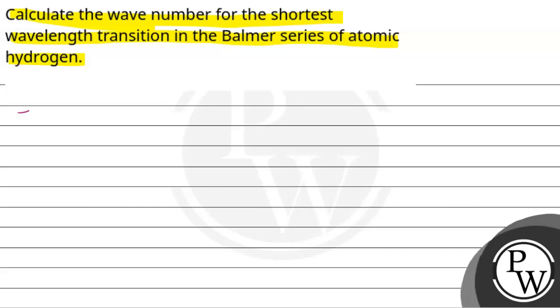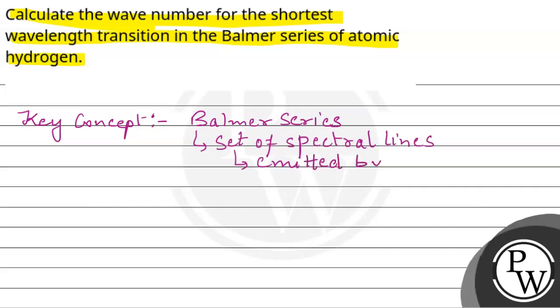First of all, we will discuss this question's key concept. So, we have to know what is Balmer series. Balmer series is a set of spectral lines which are emitted by hydrogen atom.